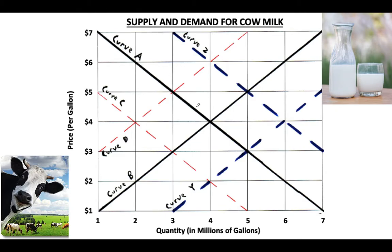Curve A is downward sloping and is our demand curve because as the price goes down, quantity increases. Curve B is our supply curve because it is upward sloping, meaning that as the price goes up, supply goes up — producers want to produce more when there's more profit to be made. On curves A and B, our equilibrium price is $4, and at $4, 4 million gallons of milk are being demanded by consumers and 4 million gallons are being supplied by producers. So we have no shortage, no surplus — our demand is being met by our supply. Everything works out perfectly at that equilibrium of $4.